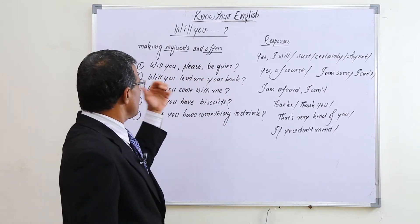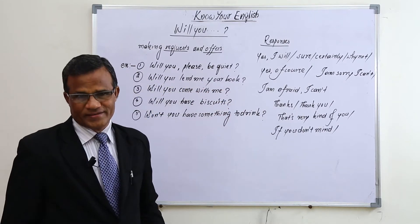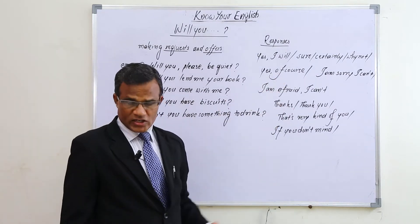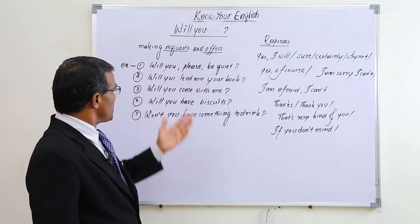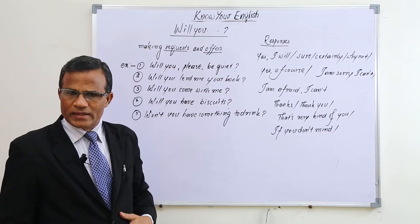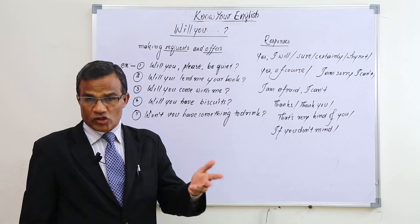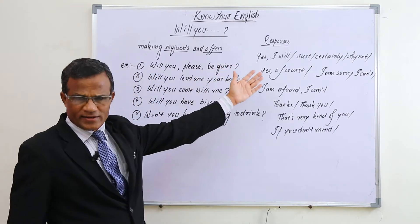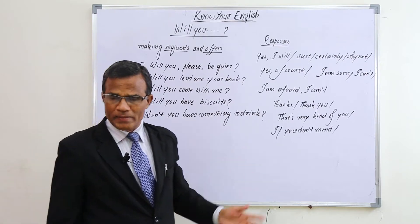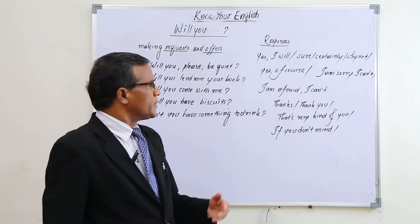The response to 'will you please be quiet?' may be 'Sure,' or 'Certainly.' Sometimes the response may be 'I'm sorry to interrupt you.' Another example: 'Will you lend me your book?' — we are asking a person in a polite way to lend his book to us.